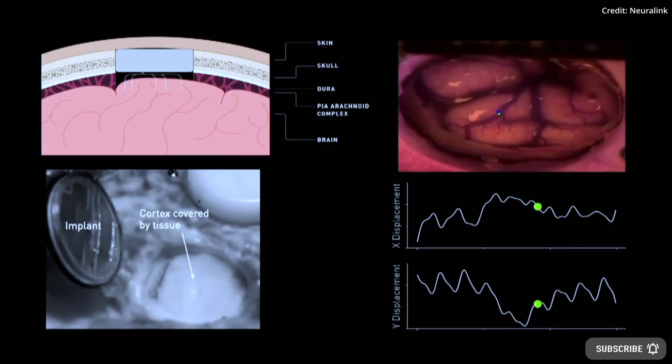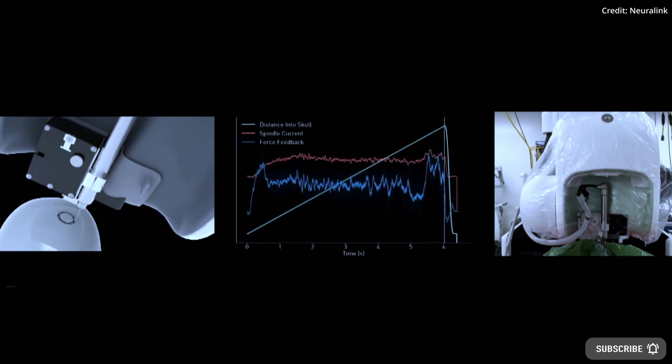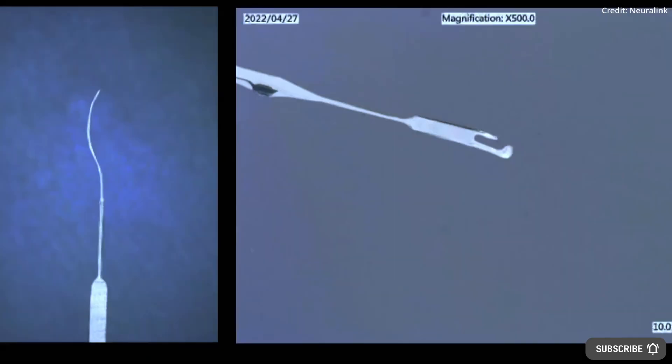The R1 surgical robot already has two operating rooms in Neuralink's location in Austin, Texas, and they are in the planning stage of opening their own clinics in the future after they get approval from the FDA for clinical human trials in the U.S.